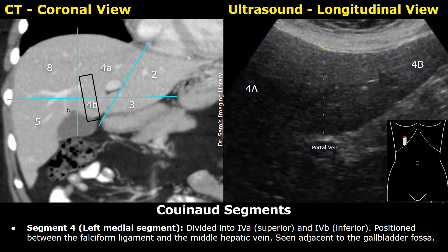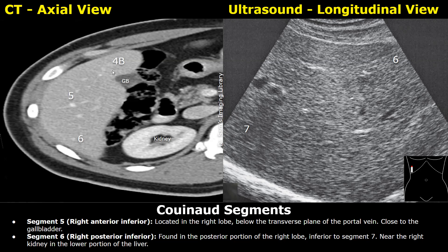In this image, the probe is placed in a longitudinal plane between the ribs, basically at the center of the liver. Here we will see segments 4a and 4b. Segment 4a is seen superiorly towards the patient's head or towards the diaphragm, and segment 4b is seen inferiorly. As we go down in the CT image, we will see a small part of segment 4b near or just anterior to the gallbladder.